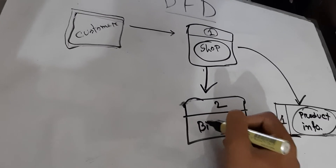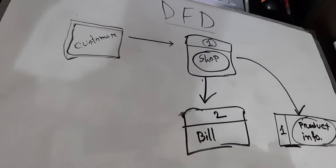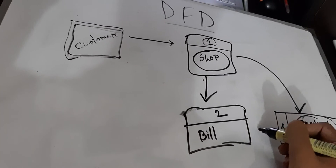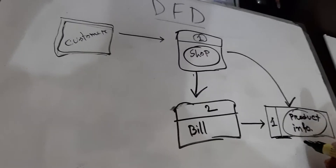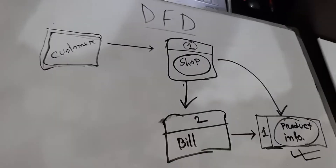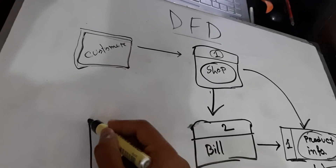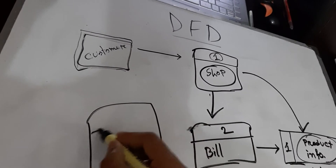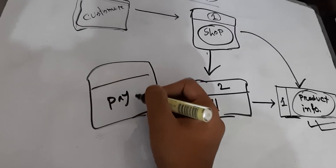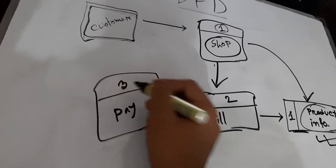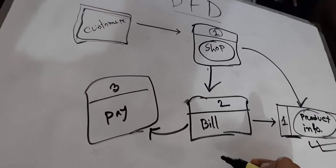I will discuss the bill process. The bill process takes the bill as input and the server use. The bill will go through the payment process. The payment process will be number 3. The data flow will carry the data.